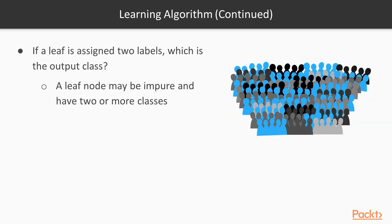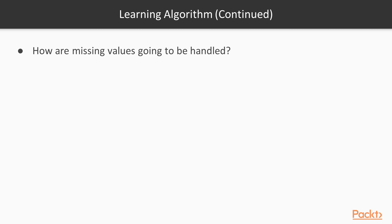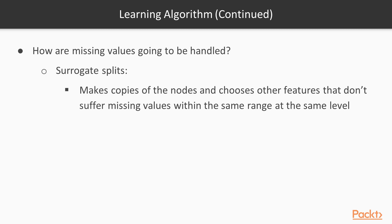So it means from our previous discussion that a leaf node may be impure and have two or more classes, but this is not a big deal since the node will predict according to the majority voting of the class probabilities at that node. Another issue is how to handle missing values, and there are two remarkable techniques for this problem. Surrogate splits makes copies of the nodes and chooses other features that don't suffer missing values within the same range at the same level, while the other technique simply follows all paths to make its final inference.